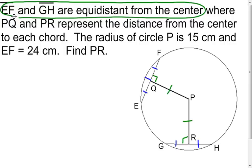Now, continuing on, it tells us that the radius of circle P is 15 centimeters, and the length of segment EF is 24 centimeters, and we need to calculate the length of segment PR.